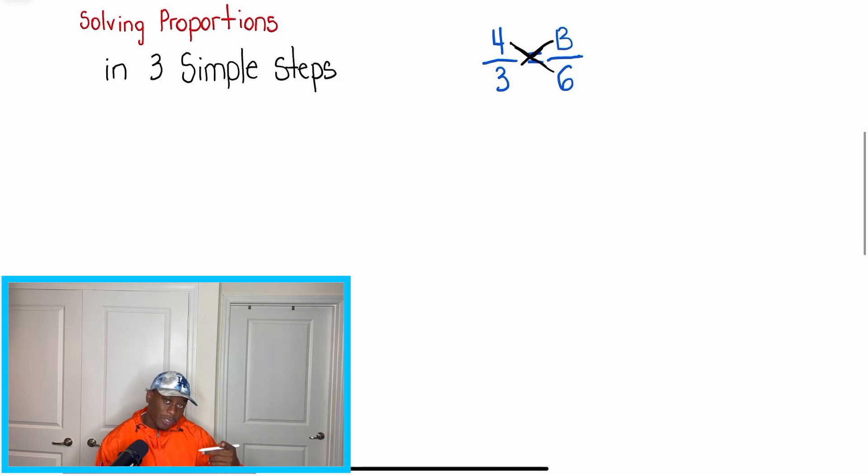My first very helpful tip is we're going to draw an X. And when we draw this X, what we're doing is we're going to cross multiply, meaning we're going to multiply the terms that are across from each other from the X that we see. That means I'm going to multiply 3 times B and 4 times 6.